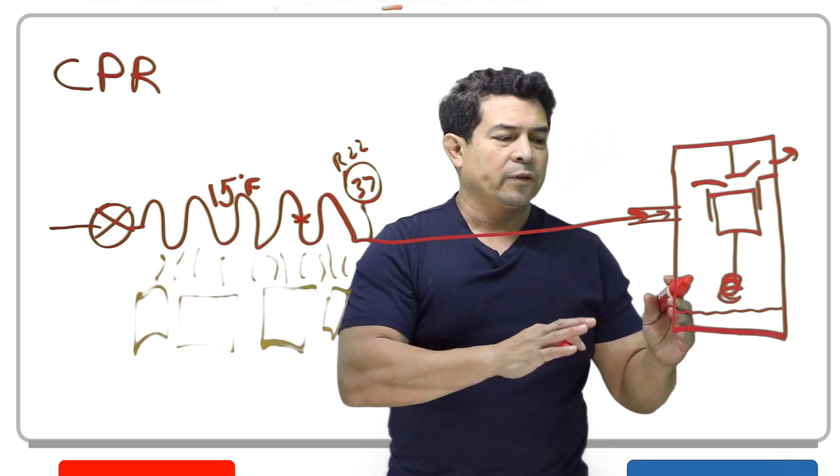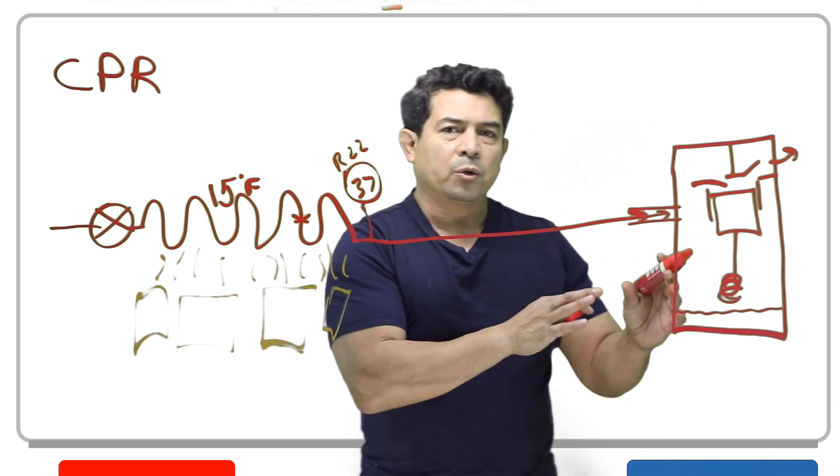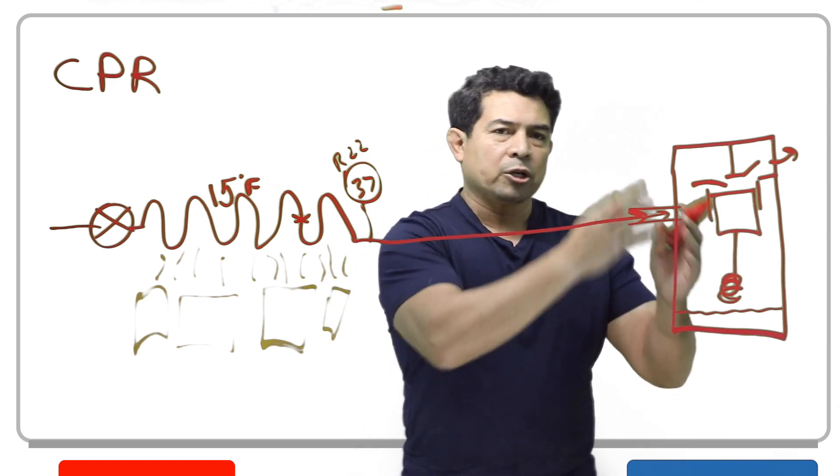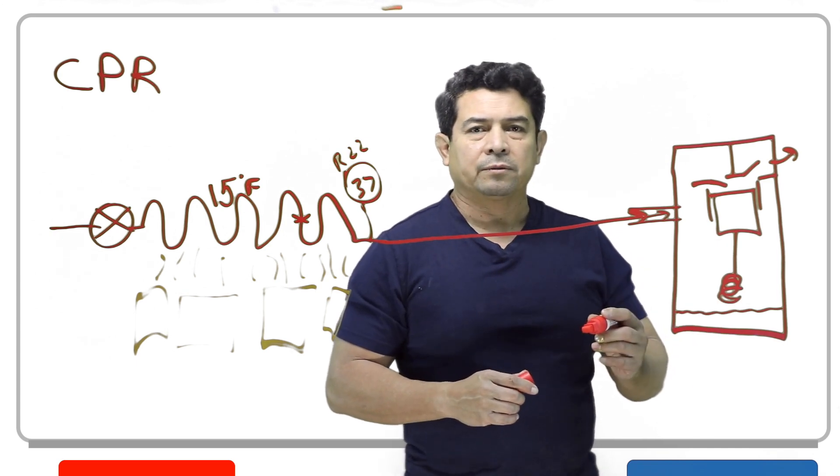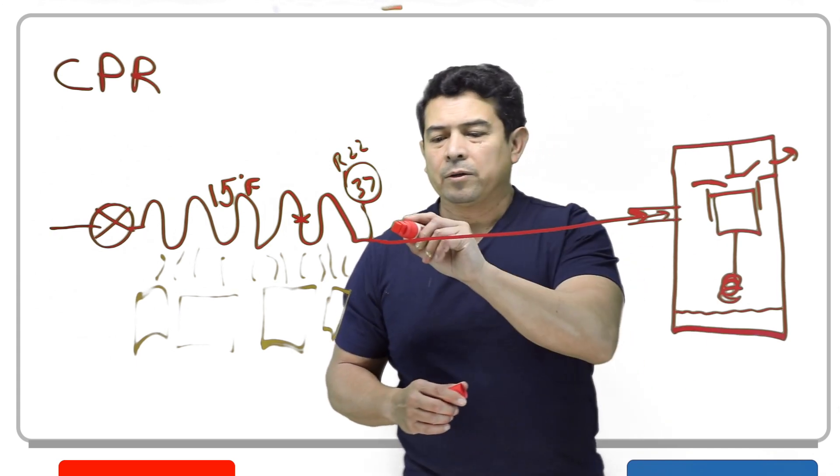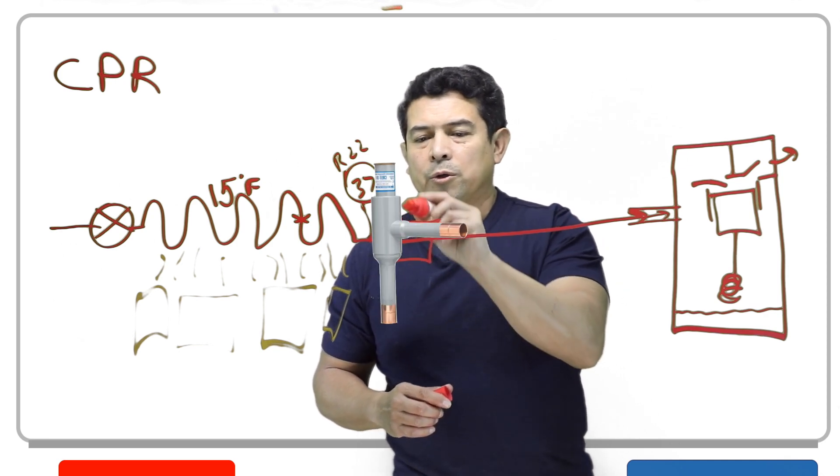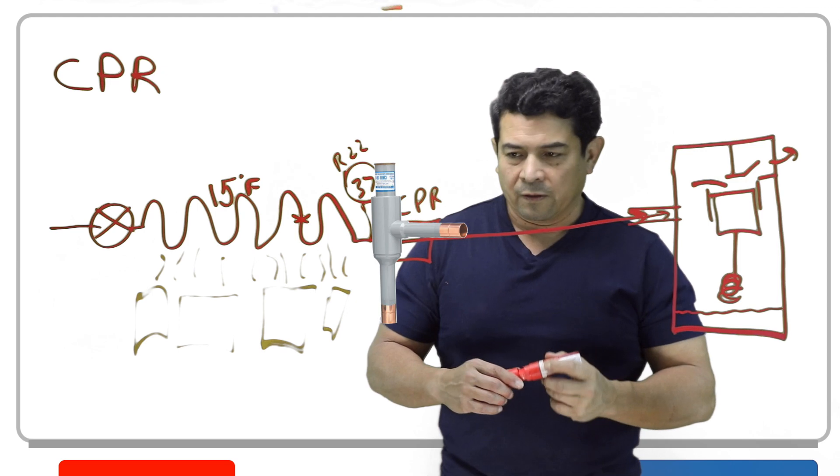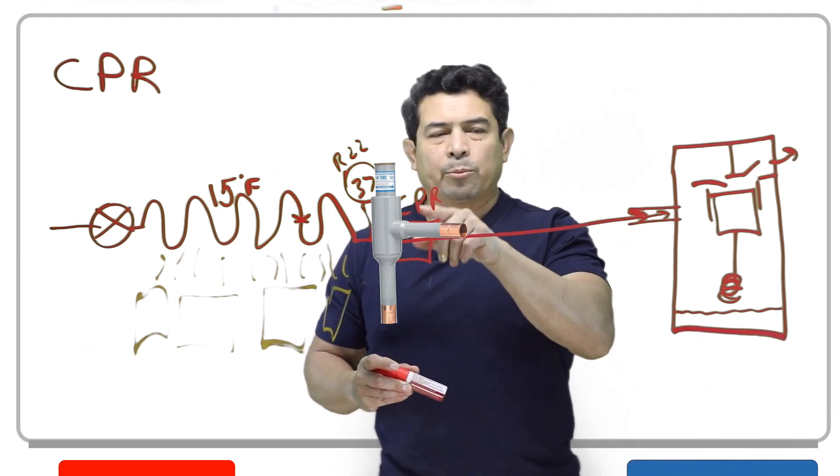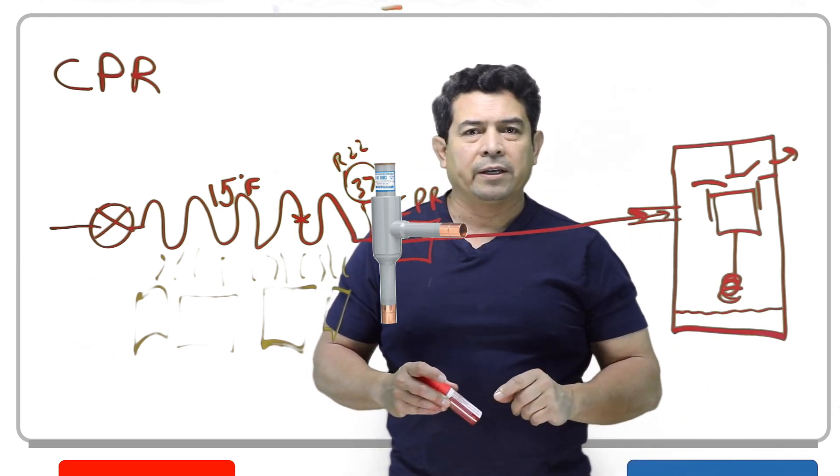If we overwork this compressor, if the suction pressure goes up too high, our pressures are going to climb. And when that happens, the compressor is going to overload. To keep that from happening, then we place your CPR valve right there. This is going to regulate the pressure that's going to the crankcase.